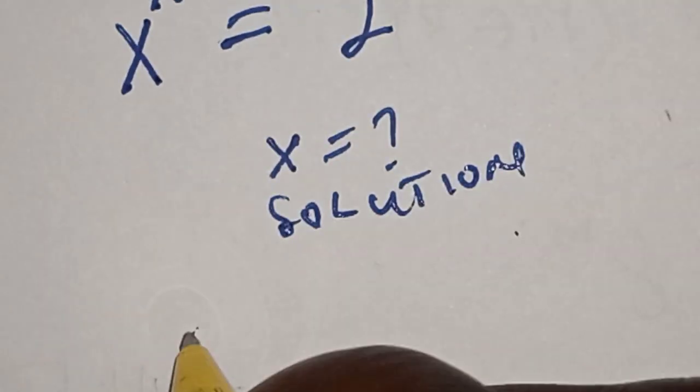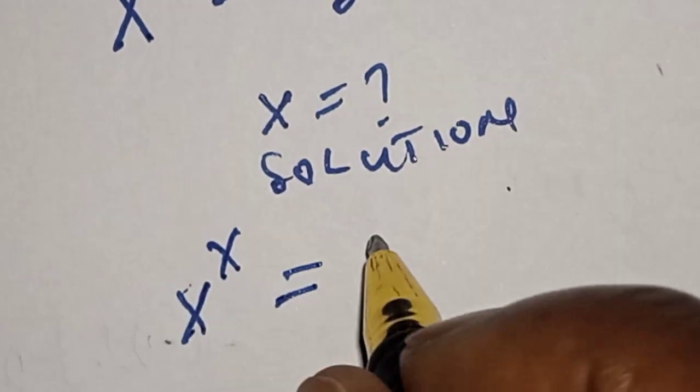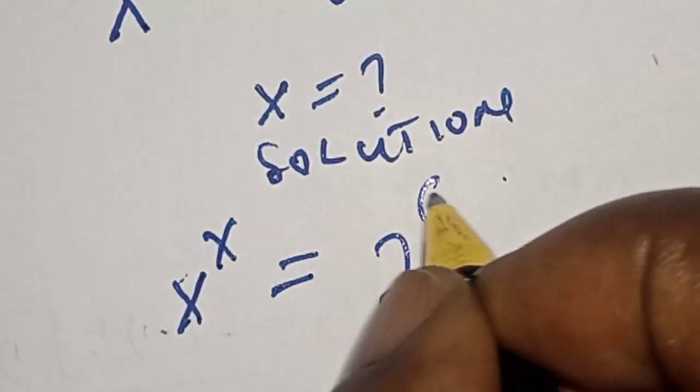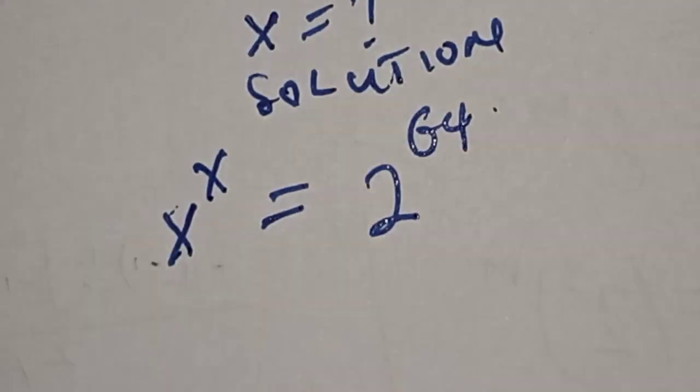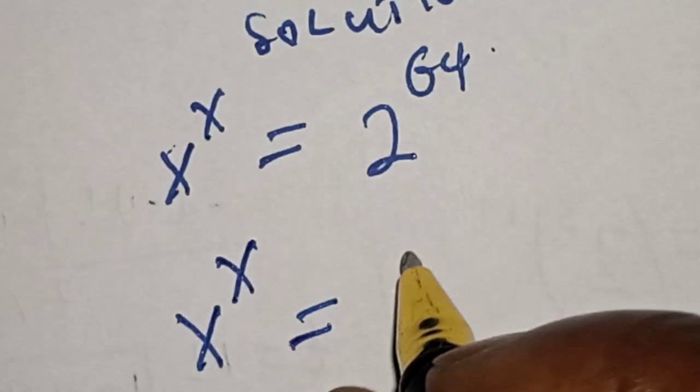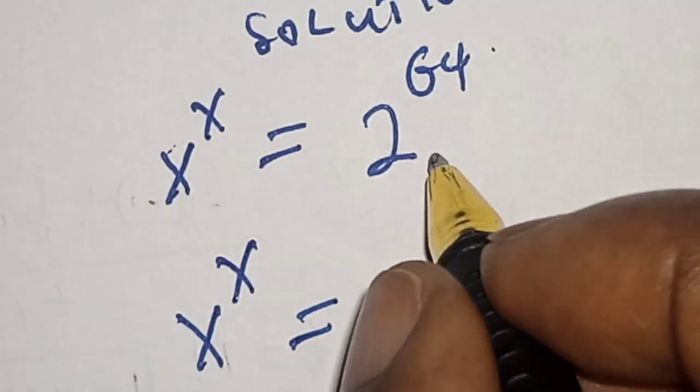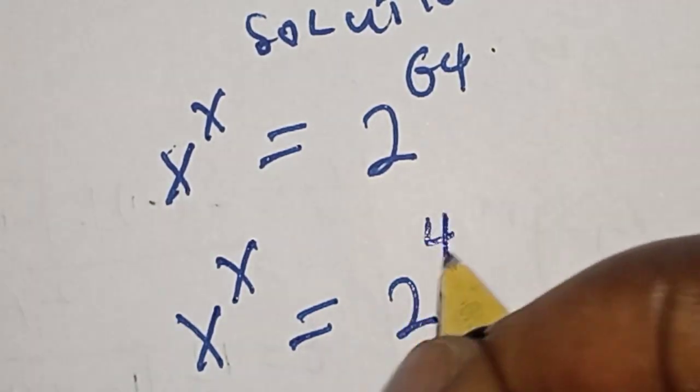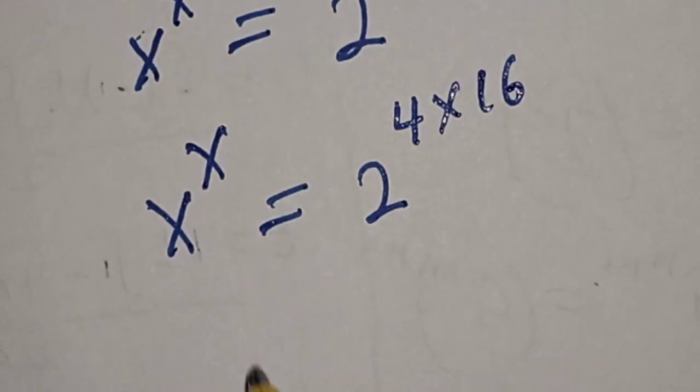This is the equation given: s raised to power s equals 2 raised to power 64. Now, 2 raised to power 64 equals 2 raised to power 4 multiplied by 16, and remember this rule: